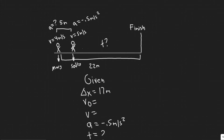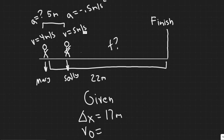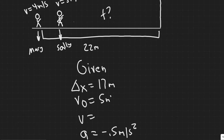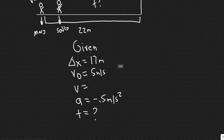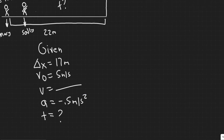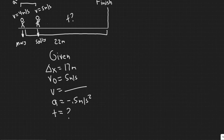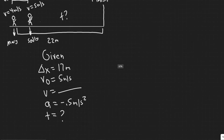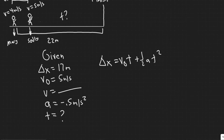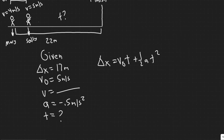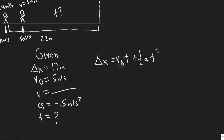V sub zero is the initial velocity at the beginning of the interval, which is just 5 meters per second. Her final velocity at the line we don't know, but we can ignore it. When you solve these, you need three kinematic variables, which we do have. It's useful to memorize your kinematic equations — just type in kinematic equations online. The equation we're going to use is delta x equals v sub zero times t plus one half a t squared, because we have delta x, v sub zero, and a, so all we need to solve for is t.